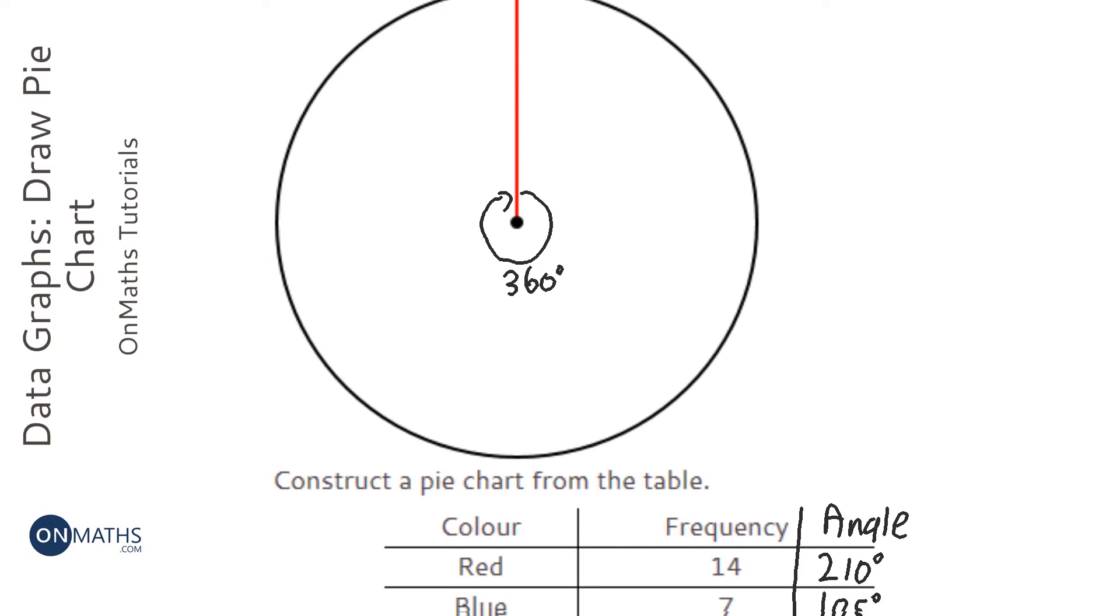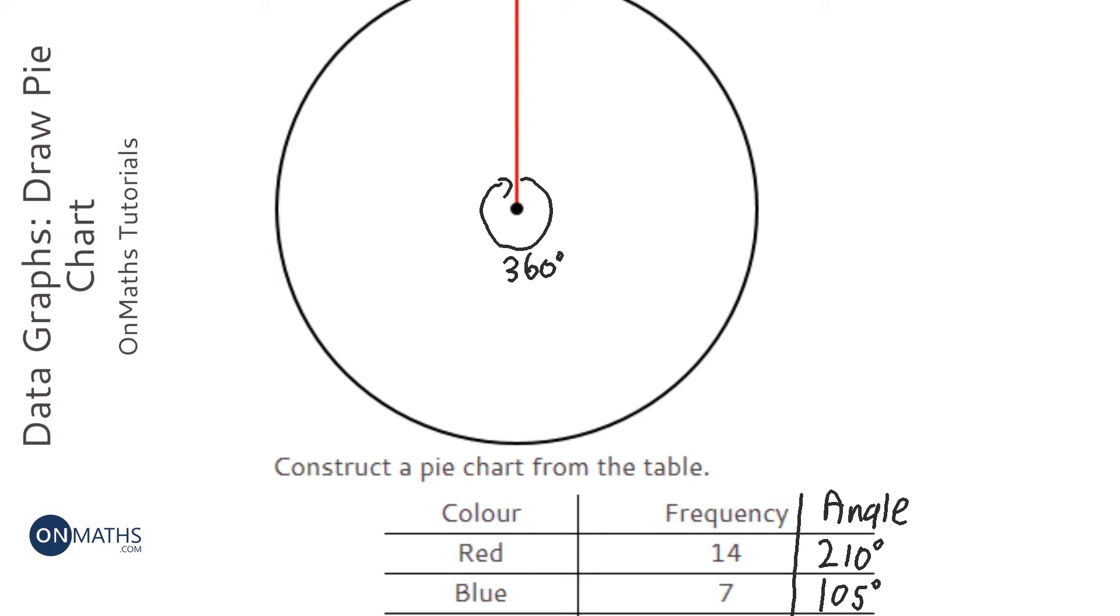That 210, for instance, what I would do is probably draw a straight line down here, like a mini sort of working out line. And do 210, take away 180, which is 30. And do sort of 30 extra degrees, which is going to roughly be there.